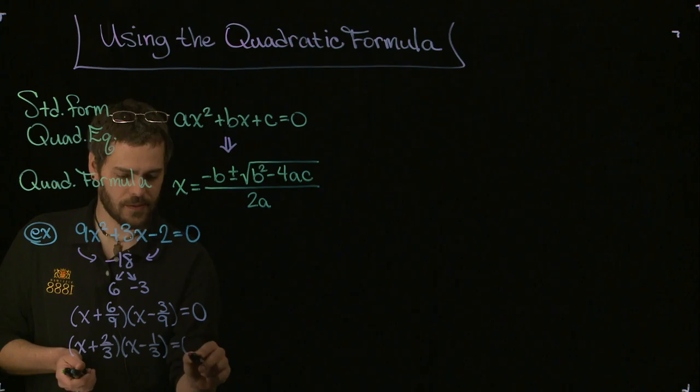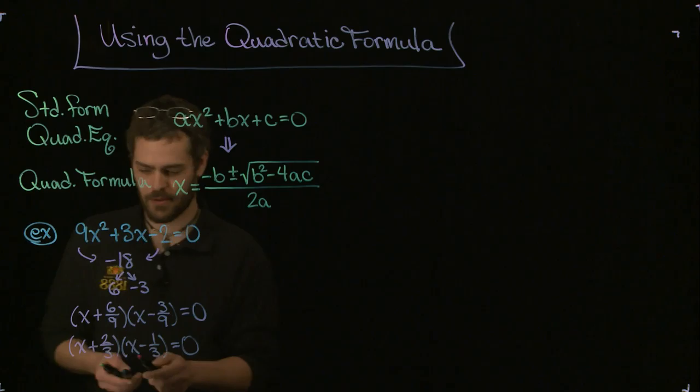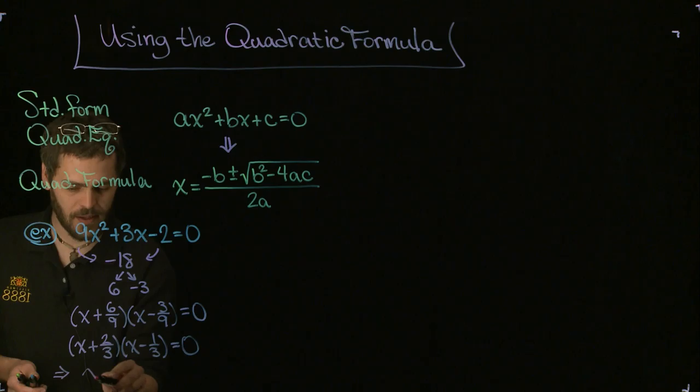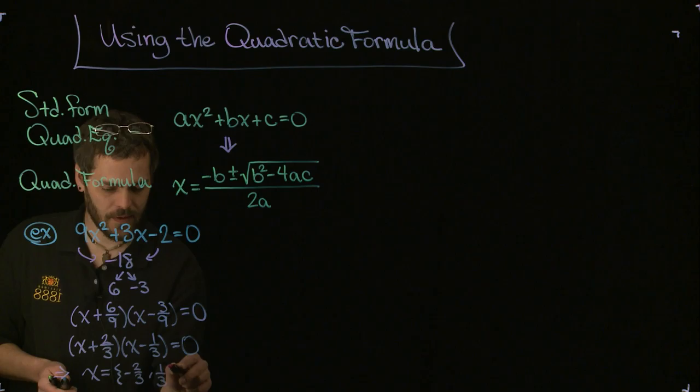Then by the zero factor principle, we can say that x plus 2 thirds equals 0 or x minus 1 third equals 0. Using both of those statements, we get the following solutions: x equals two solutions, one of them is negative 2 thirds, the other one is positive 1 third.